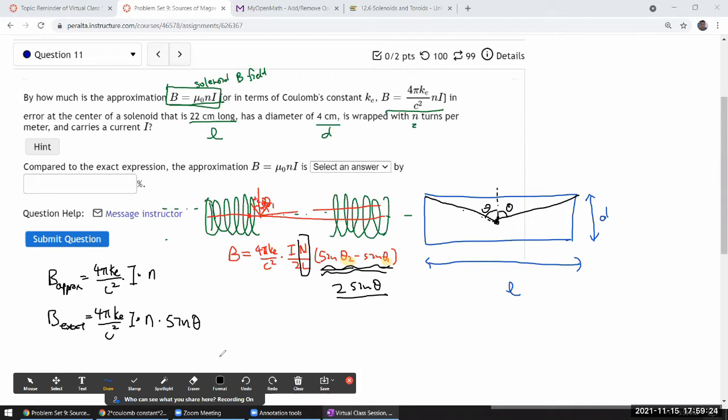The amount that the exact calculation differs from the approximation depends on sin θ. Sin θ is opposite over hypotenuse. The opposite is L/2, and the hypotenuse is the square root of (d/2)² + (L/2)². So sin θ equals (L/2) divided by the square root of (L/2)² + (d/2)². This I can calculate with a scientific calculator.